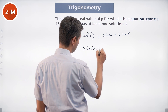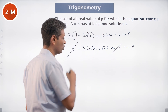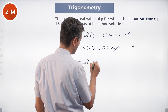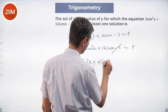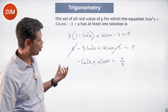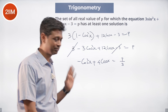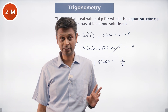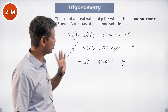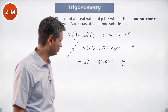This simplifies nicely because the 3s cancel, leaving -3cos²x + 12cosx = p, and dividing by 3 gives -cos²x + 4cosx = p/3. Whenever I have a quadratic I like the coefficient of the square term to be 1, so I multiply through by -1 and rearrange to get cos²x - 4cosx = -p/3.